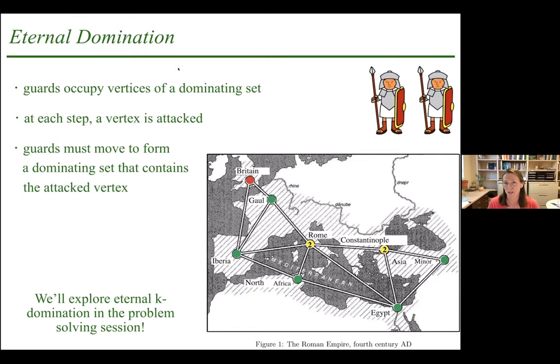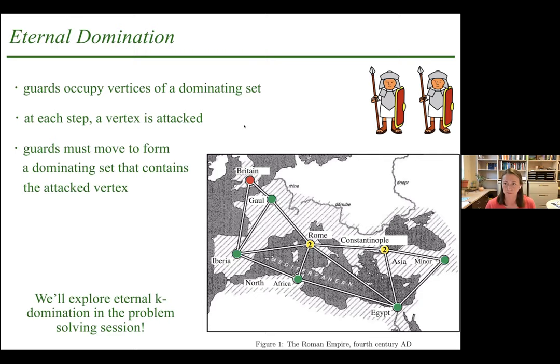A question from the chat: can a guard only move to an adjacent vertex? It depends on the model — there are many variants. In some models, guards at attacked vertices must move off, motivated by file migration. But generally in the original model, guards can only move to an adjacent vertex, sometimes with other conditions about how many guards can move. Can the visibility distance depend on the cop? We don't have that model, but we do have hyperopic cops and robbers — a farsighted version where cops can only see the robber if the robber is far away.